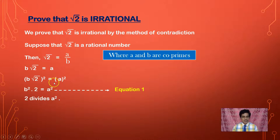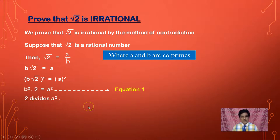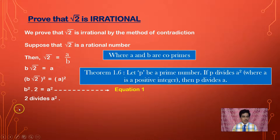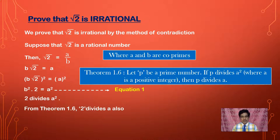So we will take that 2 divides A square. Now 2 is a prime number. Recently we learnt theorem 1.6: let P be a prime number. If P divides A square, where A is a positive integer, then P also divides A. Here 2 is a prime number, so if 2 divides A square, then from theorem 1.6, 2 divides A also.